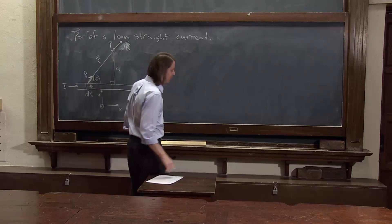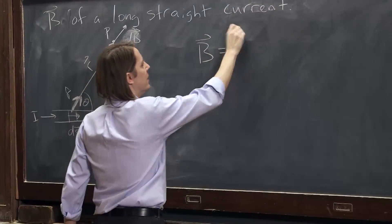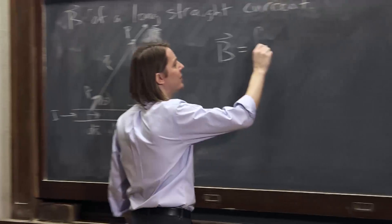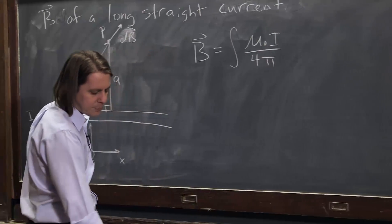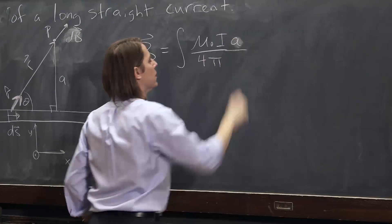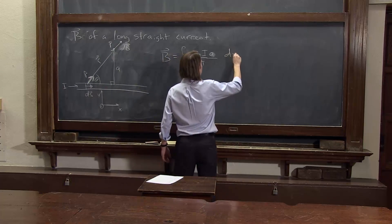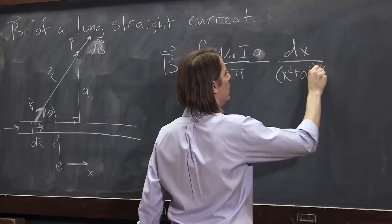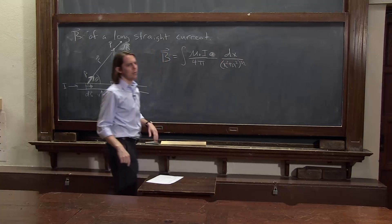Let's finish up our integral here. We had said that the B field — we're going to integrate these dBs. We had mu-naught pi over 4 pi, an A that can go with the constant, and dx over x squared plus A squared to the 3 halves. We get all this by combining the sine theta and the 1 over r squared.